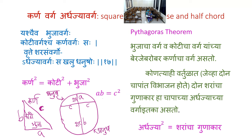In the 17th verse, Aryabhata states the Pythagorean theorem: the square of the base (Bhuja) plus the square of the height (Koti) equals the square of the hypotenuse (Karna). This is Pythagoras's theorem. It was known even earlier — stated around 800 BCE in the Sulba Sutras. The second part of this verse concerns a circle: the product of two segments (Shara/arrows) of a diameter cut by a chord equals the square of the Ardhajya (half-chord). So a·b = c², where a and b are the two arrow segments and c is the half-chord.